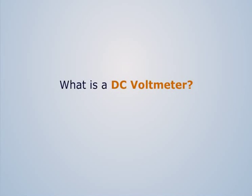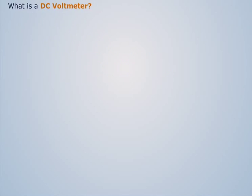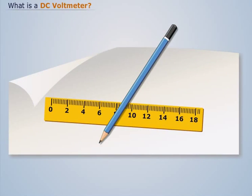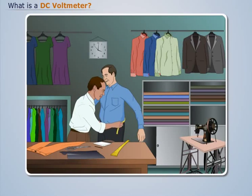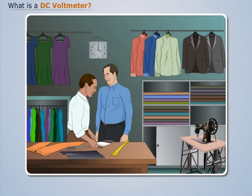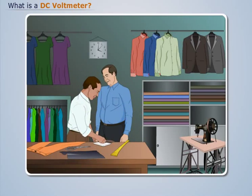What is a DC voltmeter? In our daily life, we use a scale, which is a measuring device used to measure length. Similarly, we go to a tailor to get our clothes stitched. He uses a meter tape to take our measurements.